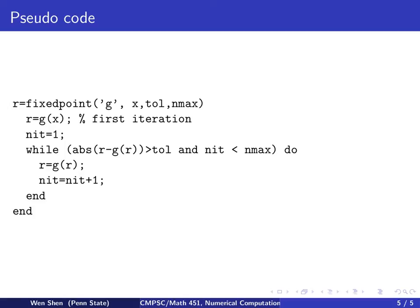Okay, so here is a pseudocode. It's actually a very simple code because it's a simple iteration. So you send in the function g, send in your initial guess x, a tolerance and max number of iterations.